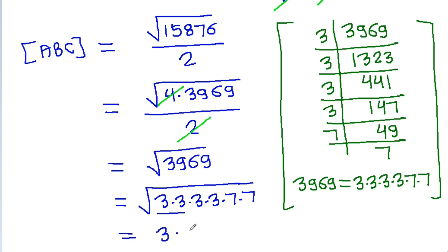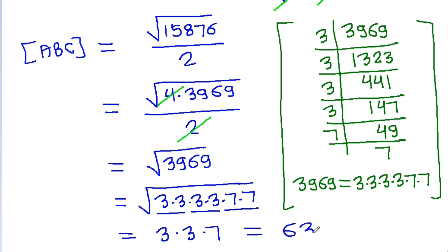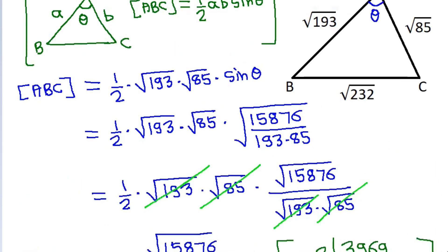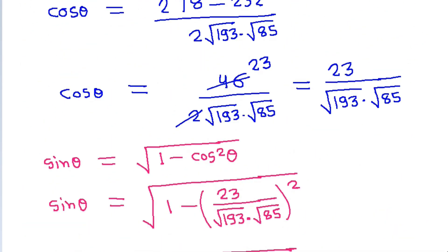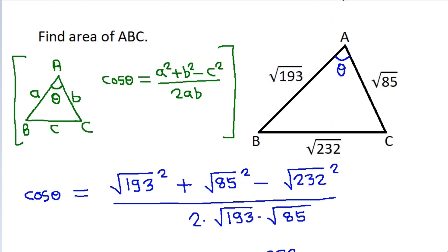And √3969: factoring gives 3 × 3 × 3 × 3 × 7 × 7, so √3969 = 3 × 3 × 7 = 63. Therefore, the area of triangle ABC is 63.